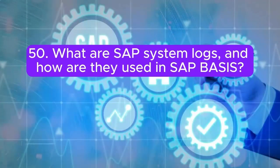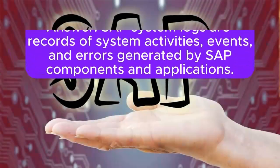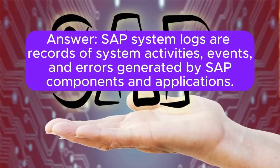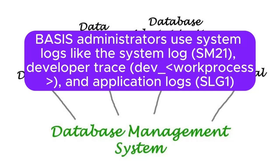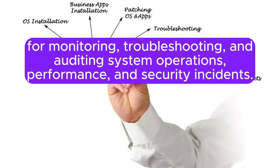Question 50: What are SAP system logs and how are they used in SAP BASIS? SAP system logs are records of system activities, events, and errors generated by SAP components and applications. BASIS administrators use system logs like the system log (SM21), developer trace (dev_work process), and application logs (SLG1) for monitoring, troubleshooting, and auditing system operations, performance, and security incidents.